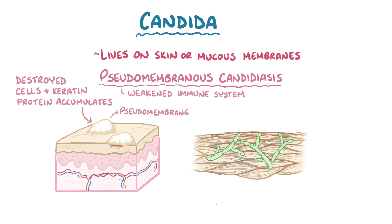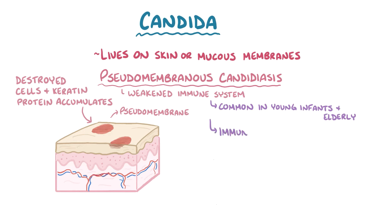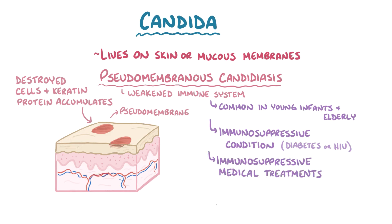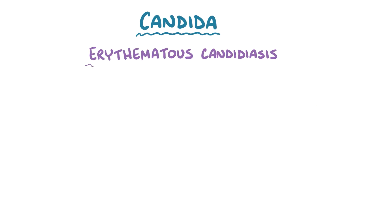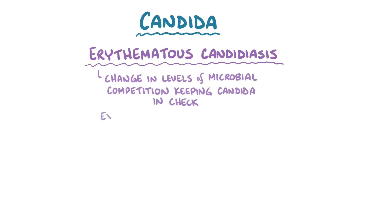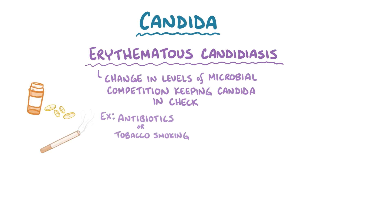The white lesions aren't typically painful, and they can be scraped away with a tongue depressor, leaving behind a red mucosal base which sometimes bleeds. Since the underlying cause is a weakened immune system, it's fairly common in young infants and the elderly, both groups that have a relatively weak immune system. It can also be related to an immunosuppressive condition like diabetes or HIV, or from immunosuppressive medical treatments like steroids — including inhaled steroids — as well as radiotherapy or chemotherapy. Another pattern of injury is called erythematous candidiasis, and that typically results from a change in the levels of microbial competition keeping Candida in check — for example, a course of antibiotics or tobacco smoking, which both selectively destroy certain bacterial populations more than they affect Candida.